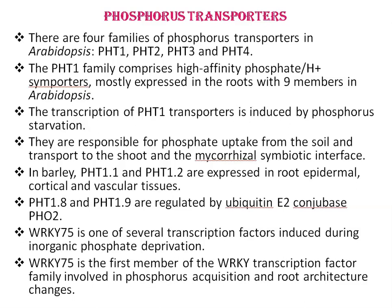PHT1 transporters are responsible for phosphate uptake from the soil and transport to the shoot and the mycorrhizal symbiotic interface. In barley, PHT1.1 and PHT1.2 are expressed in root epidermal, cortical, and vascular tissues, while PHT1.8 and PHT1.9 are regulated by ubiquitin E2 conjugase PHO2, which controls phosphorous remobilization. Regarding transcription factors, WRKY75 is one of several transcription factors induced during inorganic phosphate deprivation, and is the first member of the WRKY transcription factor family involved in phosphorous acquisition and root architecture changes.